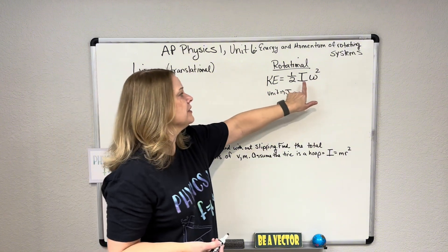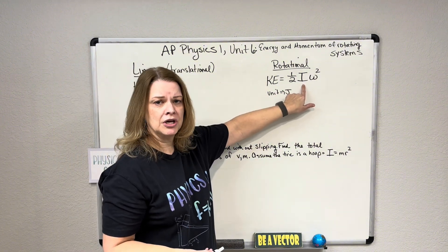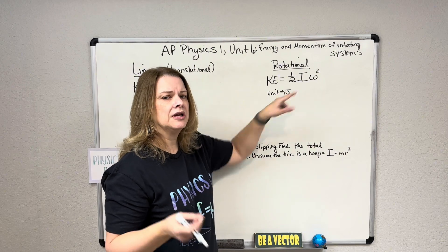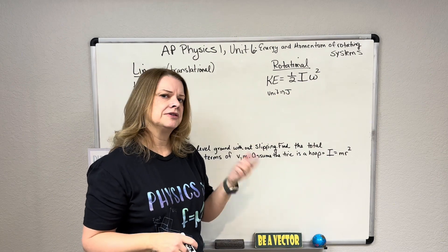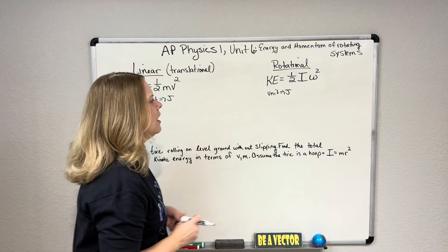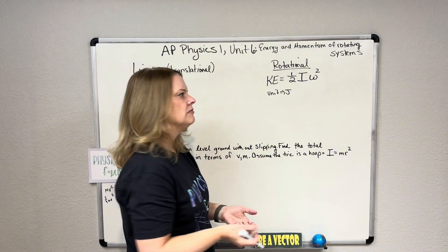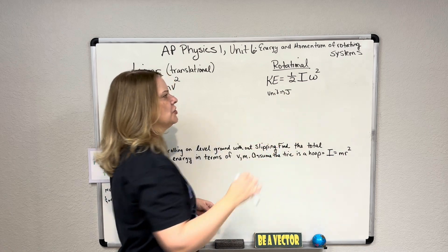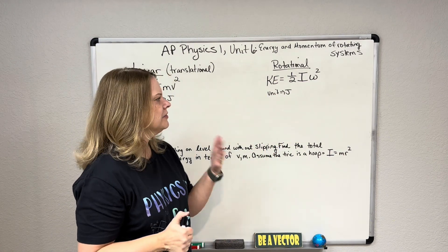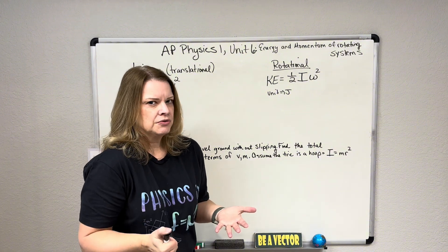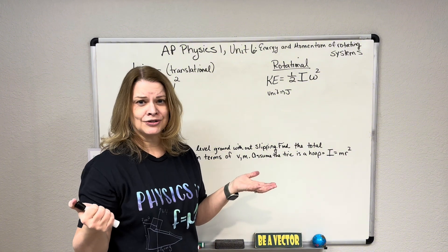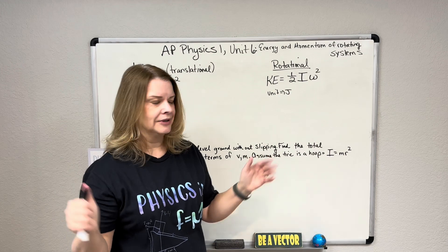Remember that the moment of inertia or rotational inertia is going to depend on the shape — it's going to depend on where that mass is distributed, and they're going to usually give you that, whether it's a hoop, whether it's a disc, a solid sphere, a hollow sphere. The more mass on the outside, remember, gives you a greater moment of inertia. And all that really means is that resistance to rotate. The higher the number, the more resistant it is to rotate. The lower the number, the less resistant it is to rotate.